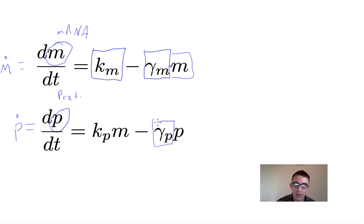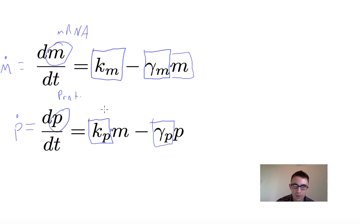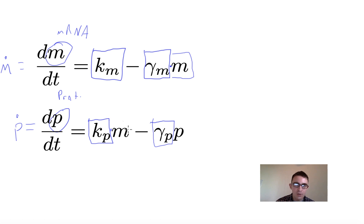For proteins, the degradation rate works the same way — gamma sub p is the protein degradation rate, multiplied by the current abundance of protein. The difference is in the production rate: k sub p is multiplied by the current abundance of mRNAs, because proteins can only be produced when mRNAs are present. That's why the protein production rate depends on mRNA abundance.